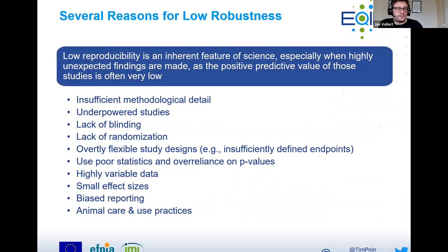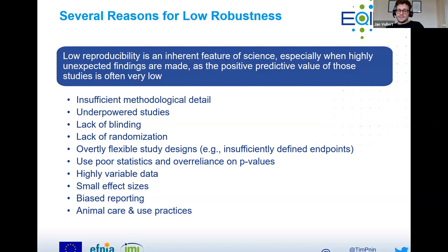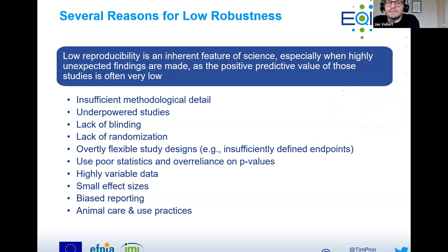We have to think about: are the extrapolations we make from animal data valid? Are the ways we translate something from animal data to human data appropriate? But also, to begin with, is the preclinical data we create robust and reliable? Are the findings we present as definitive really as definitive as we think they are? There are several reasons for the low robustness that exists in large parts of animal work. Low robustness is an inherent feature of science, especially when highly unexpected findings are made — and that goes against the grain of how the human brain works.